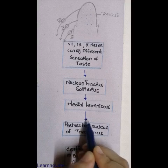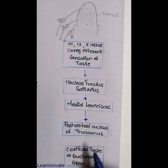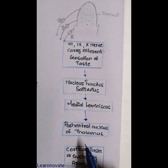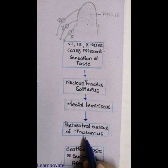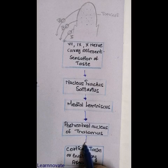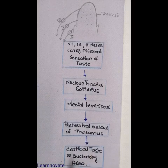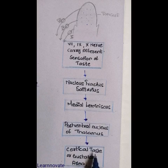After synapsing at the thalamus, the third-order neurons pass and carry the sensation of taste from the thalamus to the cortical taste area, also known as the gustatory area of the cerebral cortex.